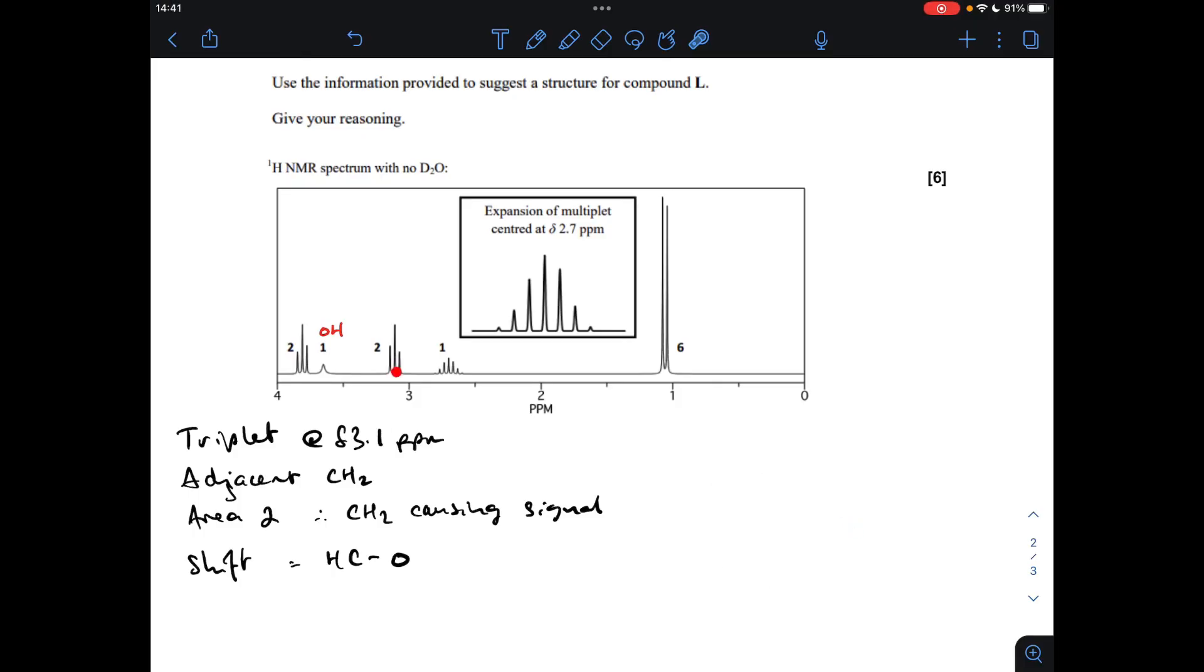Moving on to this signal here, which is another triplet with an area of two, and it's within this three to four ppm range. Essentially I'm going to have to write exactly the same again, which using this plan of attack means we must have another one of these in the molecule. Now I'm already thinking that can't be right because that would imply two OH groups.